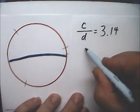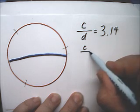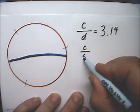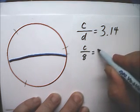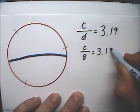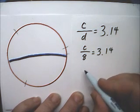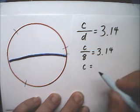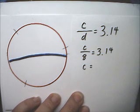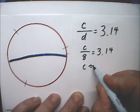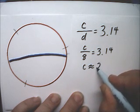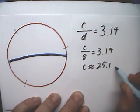So, getting back to our problem, the circumference divided by our diameter, our diameter was 8, is equal to 3.14. And now I'll multiply both sides by 8, and this circumference works out to approximately 25.1 centimeters.